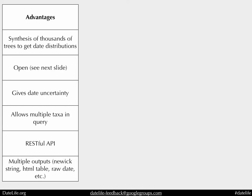What are the advantages? It's a nice way of getting a synthesis of thousands of trees to get date calibrations. People put a lot of work — some people's entire research careers are spent dating trees. Now you can use that information. We're very open: you can get the code, get the trees, download it, make your own version. You're allowed to fork it and use it however you want.